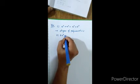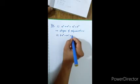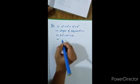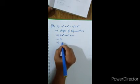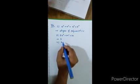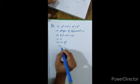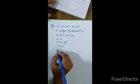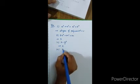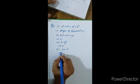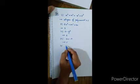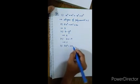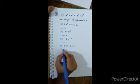Roman numeral 2: 5x cubed plus 2x squared plus 3x. The degree is 3. Roman numeral 3: 3 minus y squared. The degree is 2. Roman numeral 4: 2x minus 7. The degree is 1. Roman numeral 5: 3x squared minus 2x plus 1. The degree is 2.